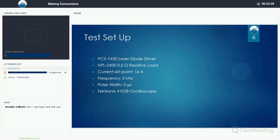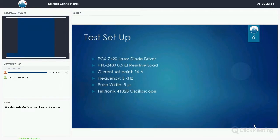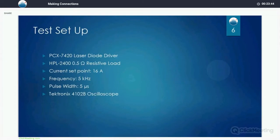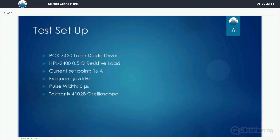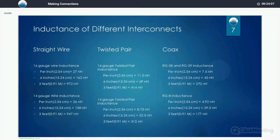In our examples here we're using a BCX 420 laser diode driver. We're going to connect it to a load. It's actually a resistive load, a very high power water cooled load that has very low inductance. We have set the driver to 16 amps of current. And we are going to operate at a frequency of 5 kilohertz and we're going to generate a pulse width of 5 microseconds. We're going to monitor the output with a 4102 TEC oscilloscope and we give you these numbers just so you see what it is that we set the experiment up for.